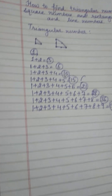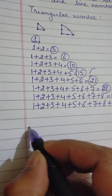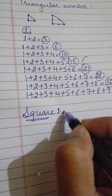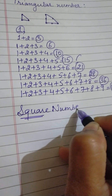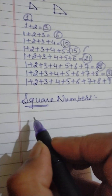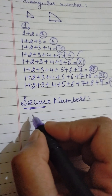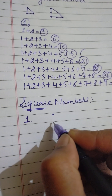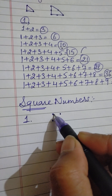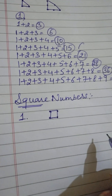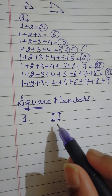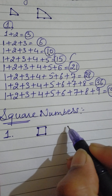Next is square numbers. Square numbers are those which can be arranged in the form of a square. First of all, 1 is a square number. The second square number is 4, because a square has all sides equal, and 4 dots make a square.